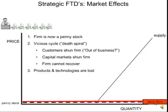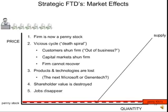Society loses the products and technologies that were offered. Because the companies that come under these kinds of attacks are often software, small pharmaceutical, and high-tech companies — because it's possible to create the most confusion about them — when the next Microsoft or Genentech is destroyed, society loses those technologies. Shareholder value is wiped out. Jobs are destroyed — not just those today, but those that the company would have created over its life cycle had it not been strangled in its crib. And ironically, the miscreant keeps his cash and often does not even pay taxes, for an arcane reason — he generally gets away without paying taxes.